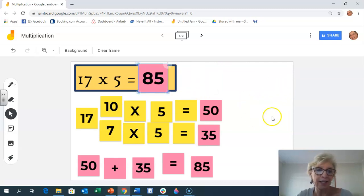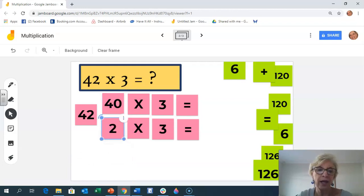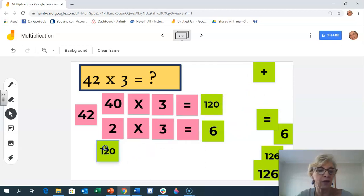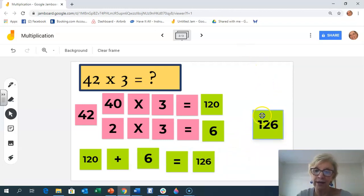One more example. 42 multiplied by 3. I'm going to split 42 into 40 and 2. And do it in two different steps. So, 40 multiplied by 3, Grade 3 is 120 because 4 times 3 is 12. 2 times 3 is 6. But now I have to bring those numbers together and total 120 plus 6 equals 126. I've now done my multiplication in two steps. And then I've combined the two answers to the multiplication sums. And got a final solution of 126.